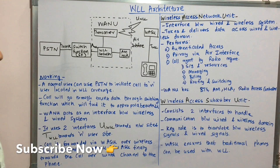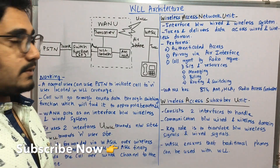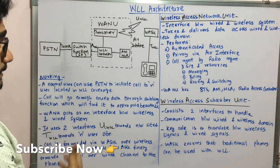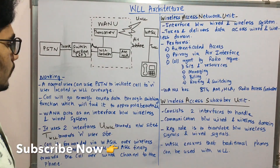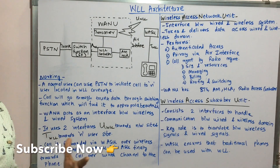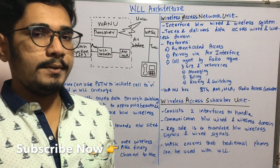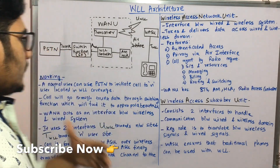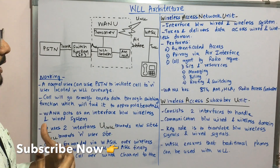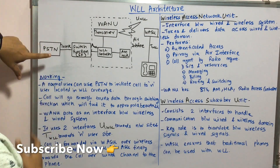Let's see the working or how call routing takes place in WLL. A normal user can use the PSTN, that is Public Switch Telephone Network, to initiate a call to end users located in a particular wireless coverage area. In your locality or region you may be connecting to different people with different numbers — that's what PSTN is. In WLL, to originate a call you use the PSTN.